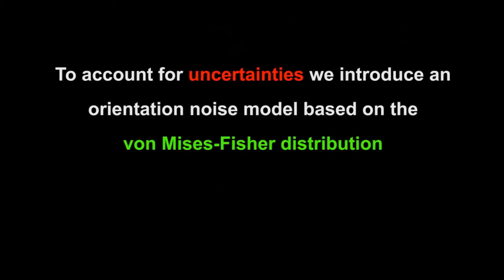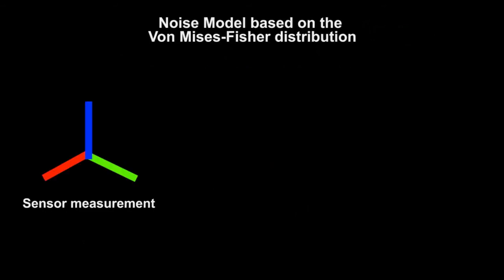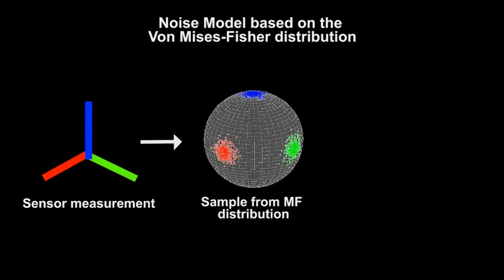To account for uncertainties, we introduced an orientation noise model based on the von Mises-Fisher distribution. The measured sensor orientation is disturbed with random samples of the von Mises-Fisher distribution.